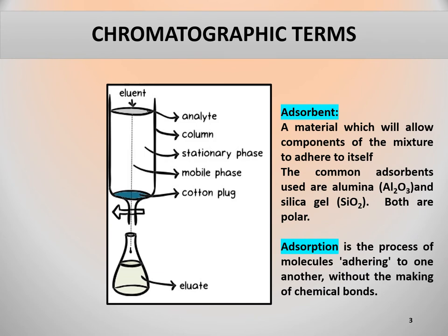Chromatographic technique uses some important terms; let's discuss them one by one. Analyte: it's a mixture whose individual components have to be separated and analyzed. Stationary phase: it's also called adsorbent; it's a material which will allow components of the mixture to adhere to itself. The common adsorbents used are alumina and silica gel, and both are polar in nature.